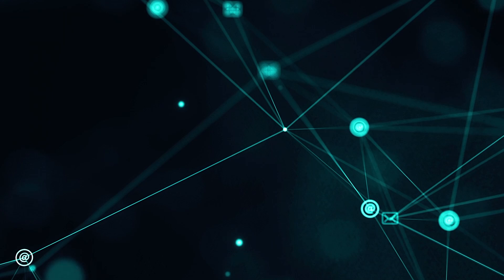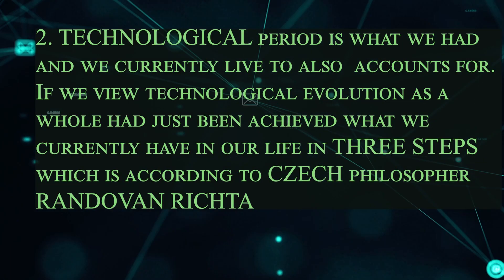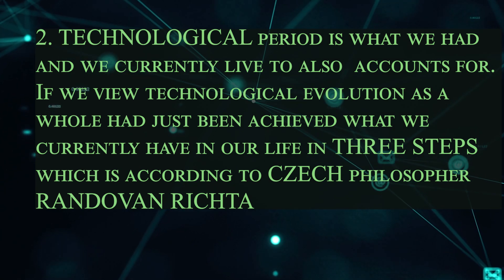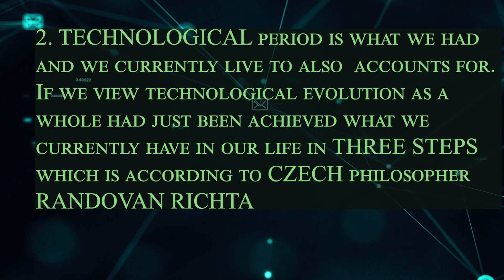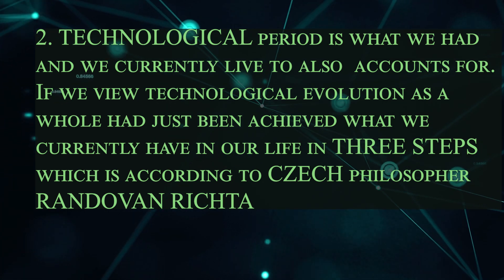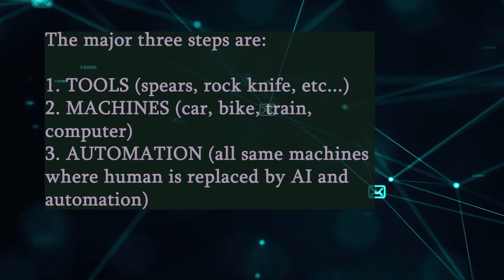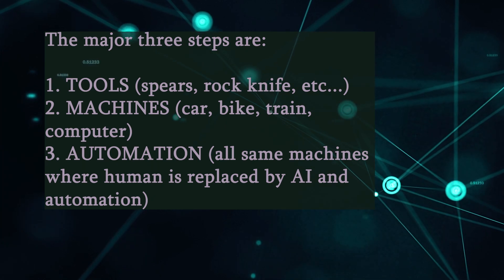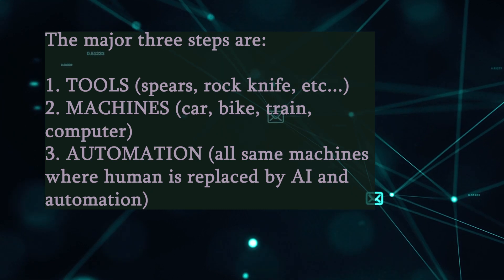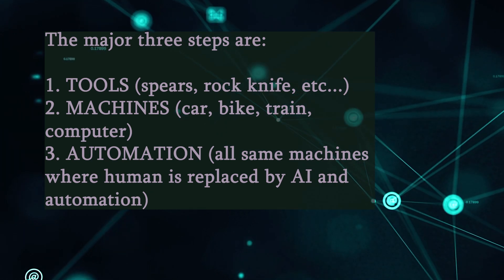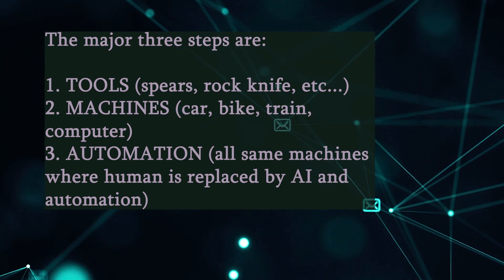The technological period is what we currently live in. If we view technological evolution as a whole, it has been achieved in three steps — according to philosopher Richta — which are: tools, machines, and automation. Examples of tools: rocks, knives, spears. Machines: cars, bikes, trains, computers. Automation is where the human is replaced by a machine.